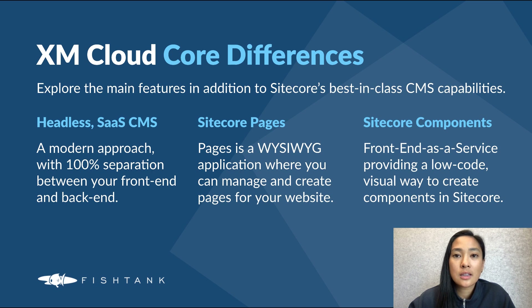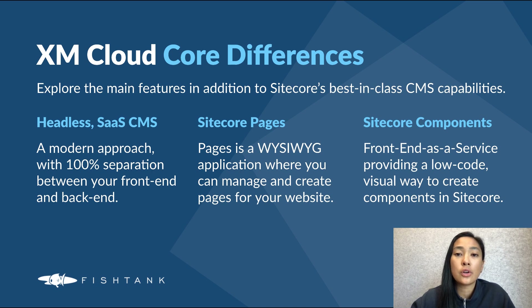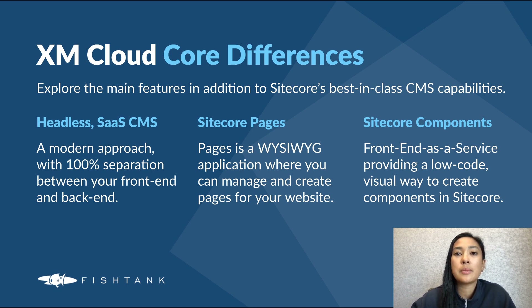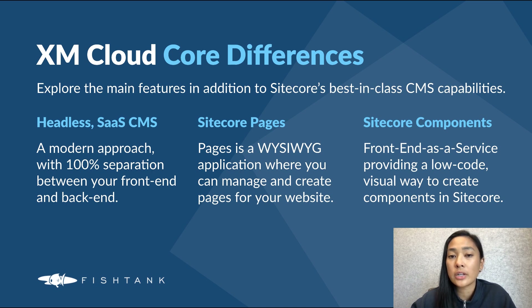Two is Sitecore Components, a powerful front-end as a service solution that allows you to create new components in a low-code, no-code environment. Instead of developing components from scratch, it provides the ability to leverage elements from your design system and extend pre-built components that can be customized and integrated into your site. You can even connect components to content sources that exist outside of Sitecore, such as an RSS feed or an API from an event management platform.